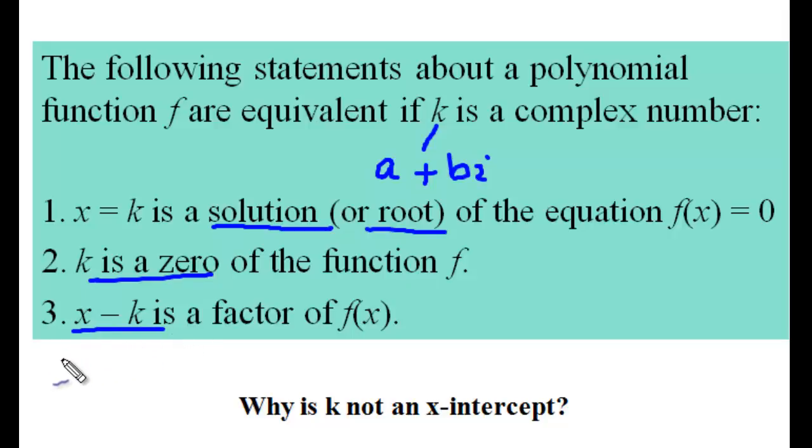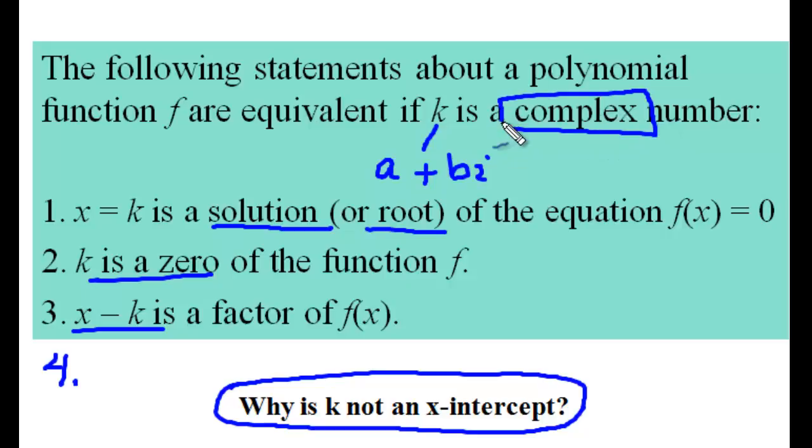Now in the previous video with real numbers, we had a fourth one that said that k was an x-intercept. So why isn't k an x-intercept? Because k is complex. It has an imaginary portion. And on our Cartesian coordinate system here, these are all real numbers. We do not have an imaginary portion on this graph, and so the imaginary part will not be intersecting the x-axis.